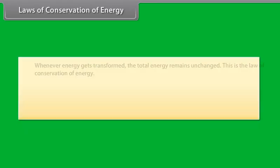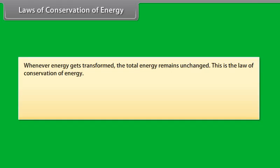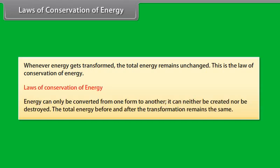We now know that the form of energy can be changed from one form to another. Whenever energy gets transformed, the total energy remains unchanged. This is the law of conservation of energy. According to this law, energy can only be converted from one form to another; it can neither be created nor destroyed. The total energy before and after the transformation remains the same.